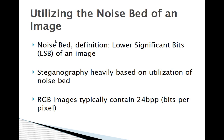Steganography essentially works by utilizing the noise bed of an image. The noise bed is basically the lower significant bits of the image. RGB images contain 24 bits per pixel — one byte for each channel: red, green, and blue. So if we are going to hide a hidden image in the lower two significant bits of the original image, two bits per byte, we would be able to hide six bits in each pixel.